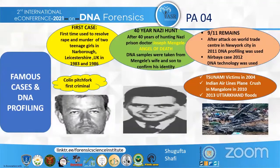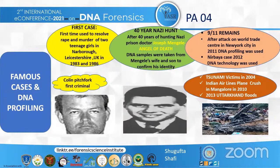Now I'll discuss famous cases resolved using DNA profiling. The first case is that of Colin Pitchfork — the first criminal convicted of murder based on DNA evidence — for the murders of two young girls in 1983 and 1986. Initially Richard Buckland was believed to be the murderer, but after Alec Jeffreys applied DNA fingerprinting, taking 5,000 blood samples from local men, the case was resolved. Pitchfork was arrested in September 1987 and was allegedly released in 2015.